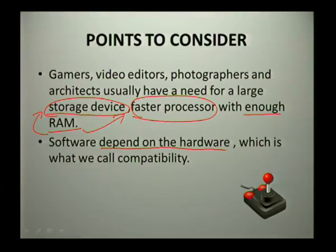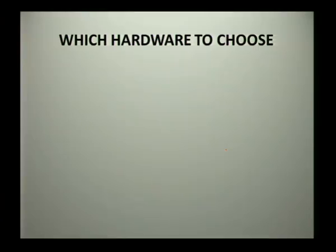Besides knowing your hardware, your software always matters. Your software depends on the hardware that you have — which is what we call compatibility. When you use software, you have to use software that is compatible with your hardware. You cannot use software designed for Windows 7 on a Windows XP computer, which is why we have different versions for different types of hardware.